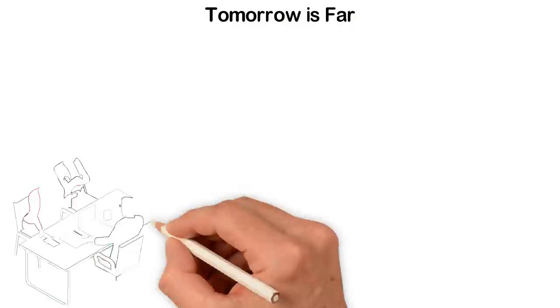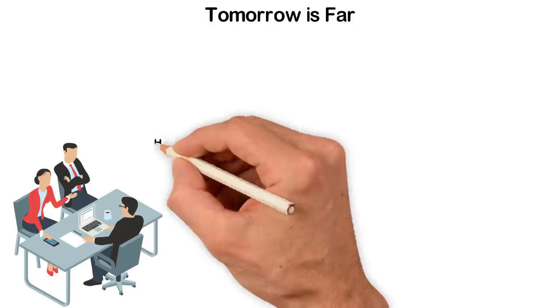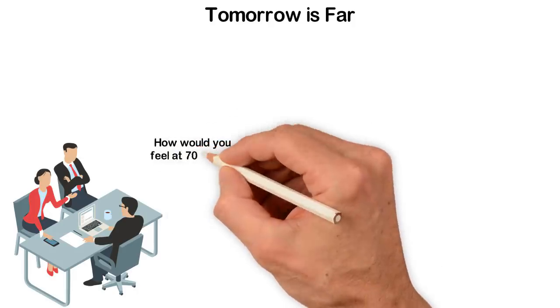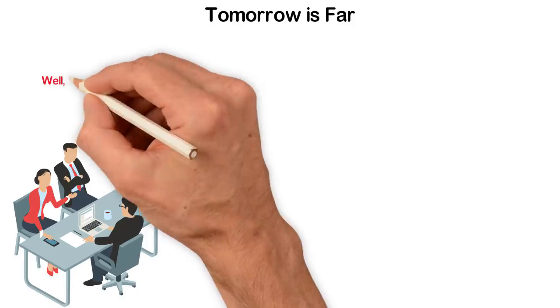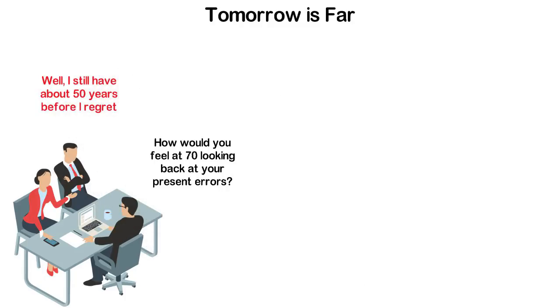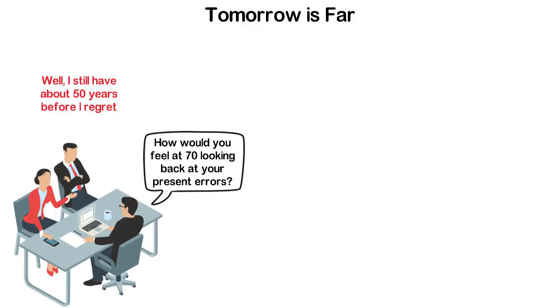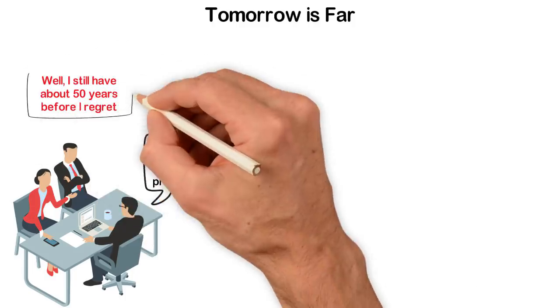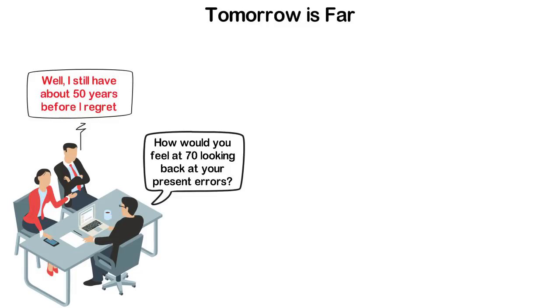Tomorrow is far. I once watched a young man on TV who was doing what was obviously wrong. When he was asked how he would feel at 70, looking back at his present errors, he said, 'Well, I still have about 50 years before I regret.' This sounds so stupid but we all do similar things in our life because we think that tomorrow is far. Don't deceive yourself. Tomorrow is now.